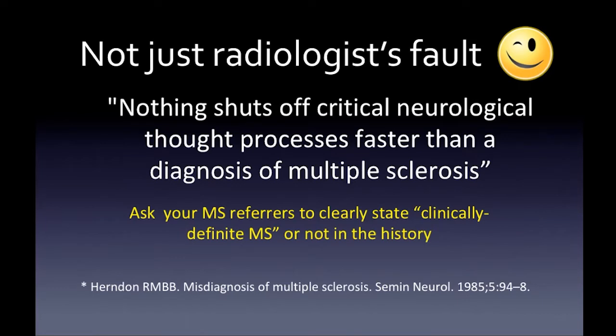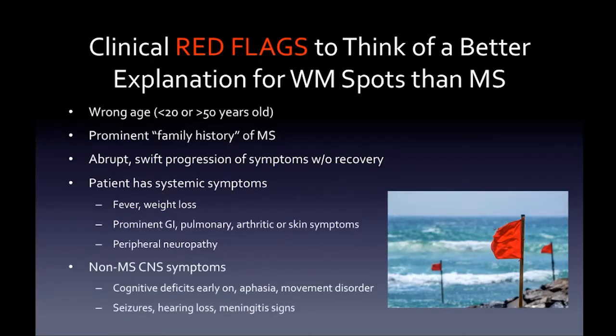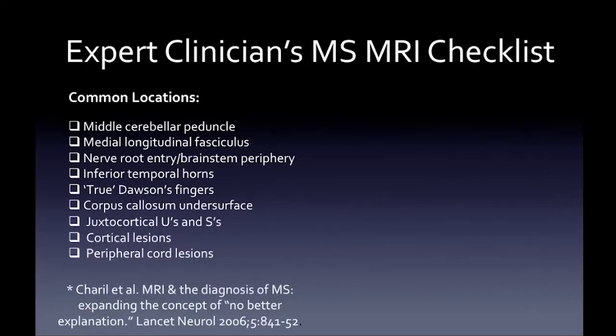Clinical red flags to consider a better explanation for white matter spots than MS: if the patient is the wrong age — outside the 20 to 50 year old window — if there's a prominent family history of MS, abrupt progression of symptoms without recovery, systemic symptoms like fever, weight loss, skin rashes, peripheral neuropathy, or non-MS CNS symptoms like early cognitive deficits, aphasia, seizures, hearing loss, or meningitis signs.